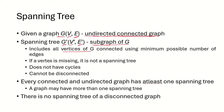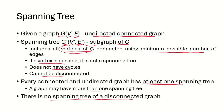This spanning tree will include all the vertices of the graph, and these vertices will be connected using the minimum possible number of edges. The spanning tree needs to have all the vertices of the graph — if any vertex is missing, we cannot call it a spanning tree. The spanning tree will not have cycles and it cannot be disconnected, so the spanning tree will also be connected.